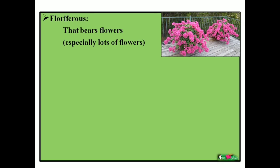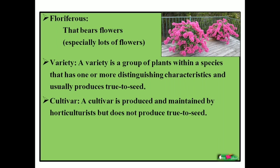Next is variety and cultivar. Most people think these are the same thing, but they are not — there is a big difference. Without reading the definitions, I'll explain simply: if any plant or group of plants produces from true seed as wild flora, without any interference of man, that is called a variety. But in cultivar, if we cross plants and produce a different plant through crossing, that is called a cultivar. So variety occurs naturally, while cultivar involves the interference of man — that is the main difference.